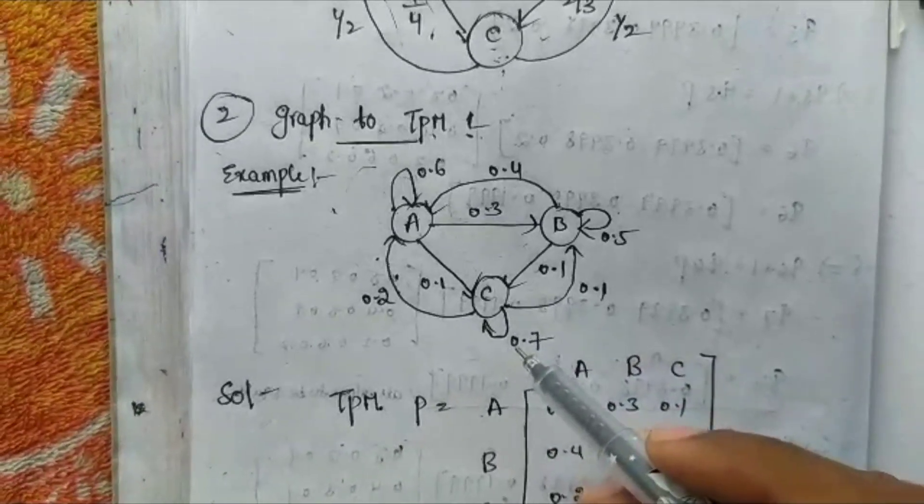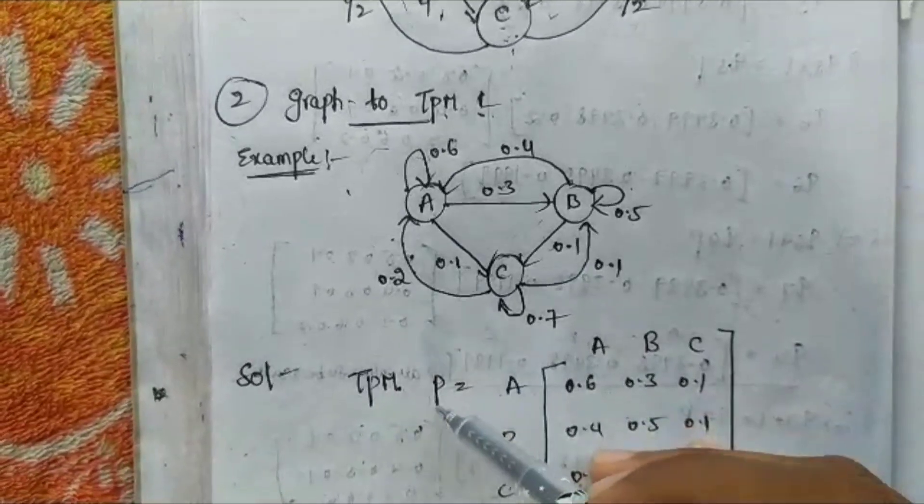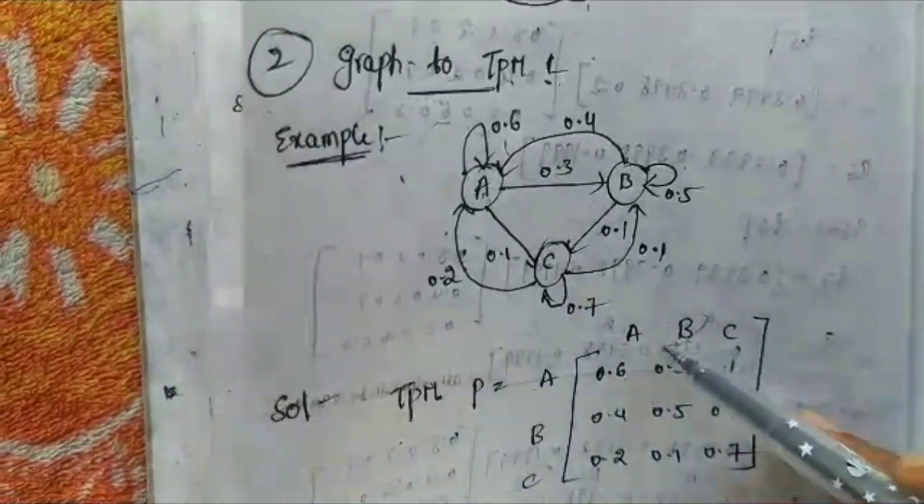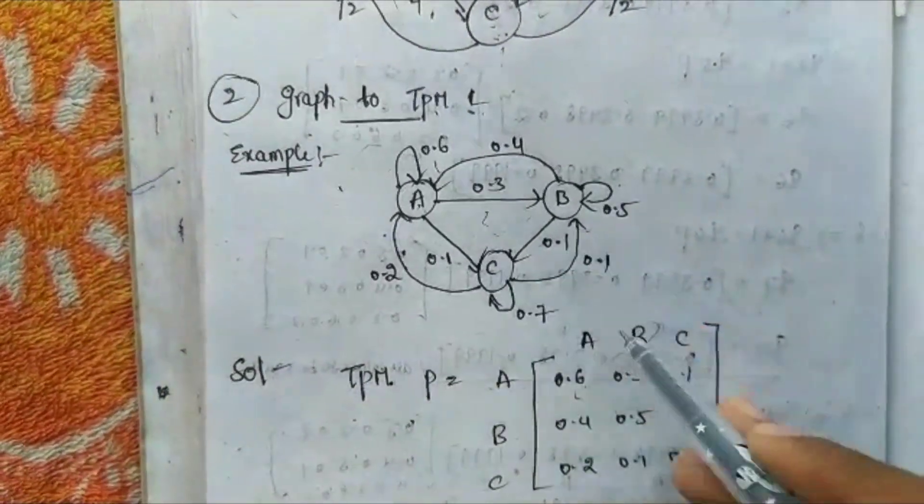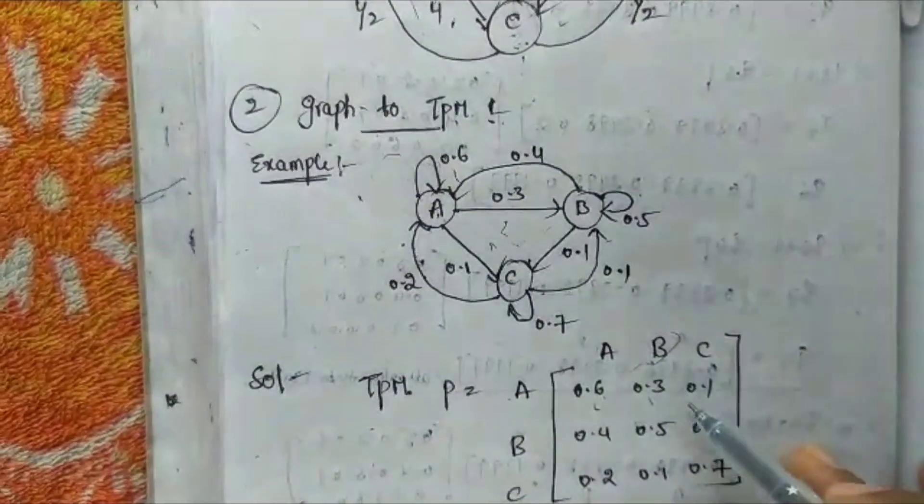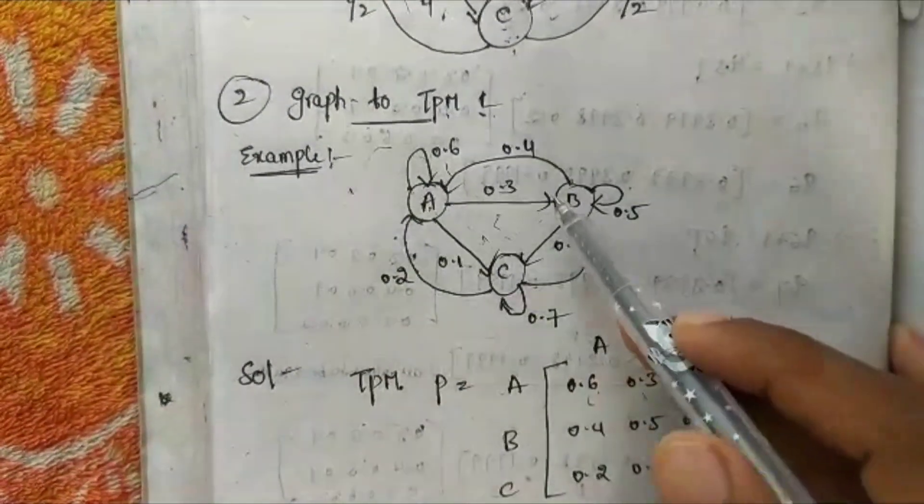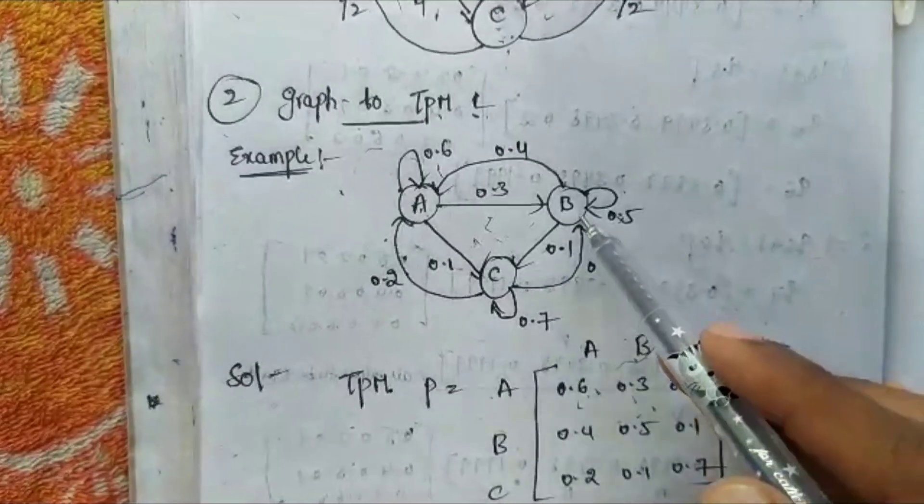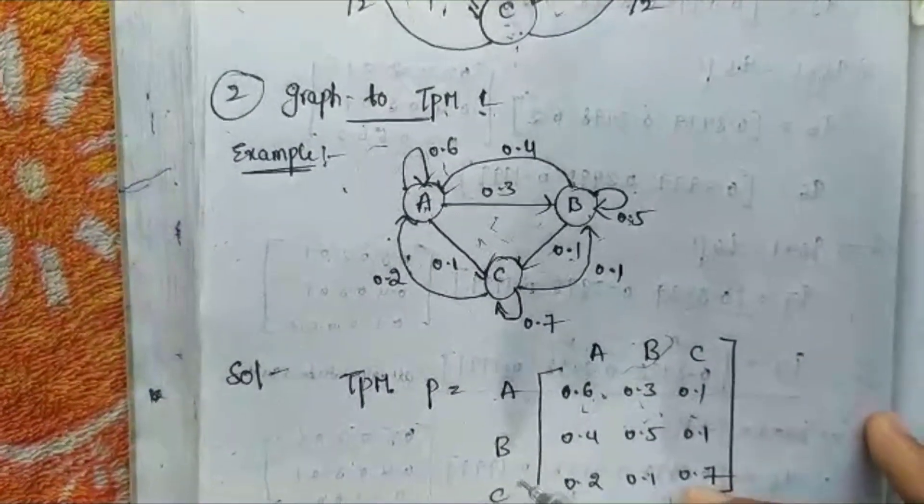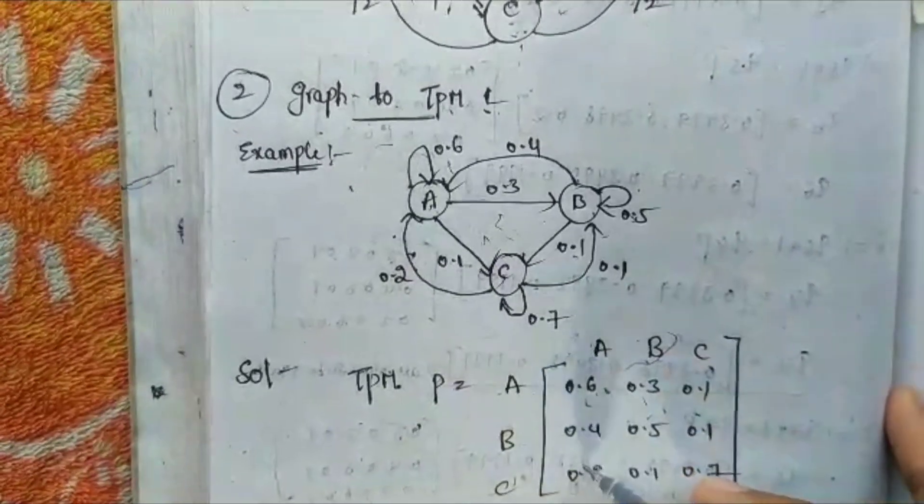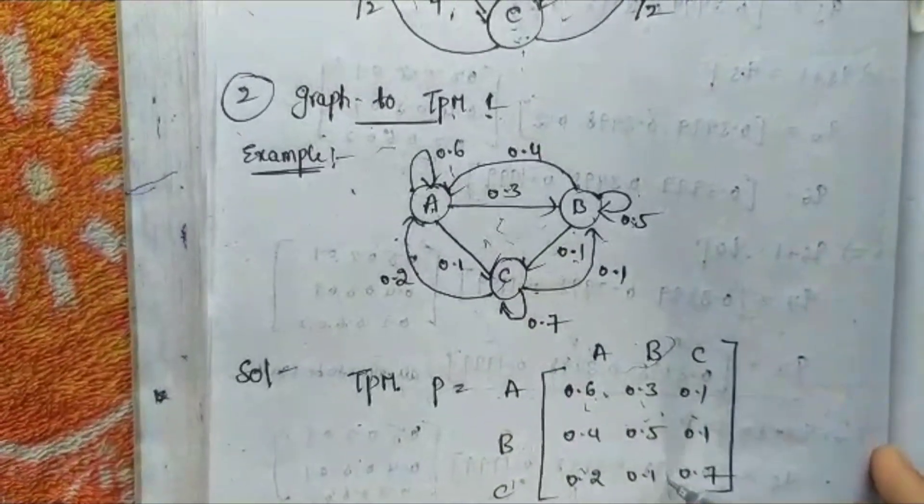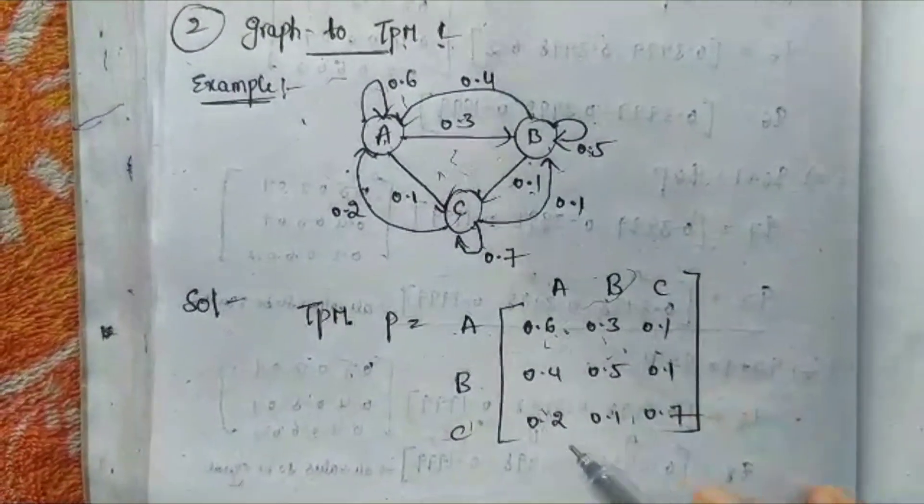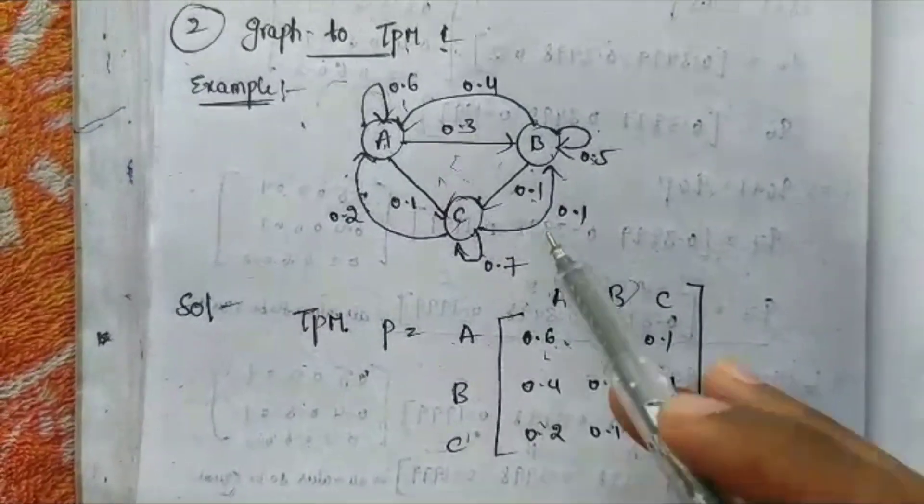From the transition diagram, A to A is 0.6. We write the ABC matrix where A to A is 0.6, A to B is 0.3, and A to C is 0.1. B to A is 0.4, B to B has a self-loop of 0.5, and B to C is 0.1. C to A is 0.2, C to B is 0.1, and C to C has a self-loop of 0.7. Hence, this is the transition probability matrix from the given graph.